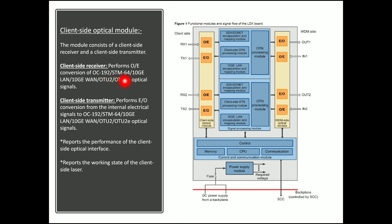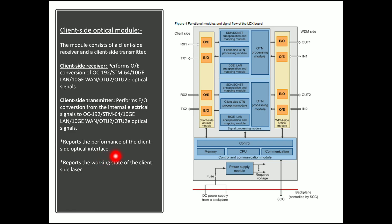In the LDX card, this is a 10G port which receives multiple types of client services — OC-192, STM-64, 10G LAN, 10G WAN, and OTU2 optical signals — and converts them into electrical signals for the mapping process. The client side transmitter performs electrical-to-optical conversion from internal electrical signals back to these optical signal types. The client side optical module also reports and checks the working state of the client side laser.